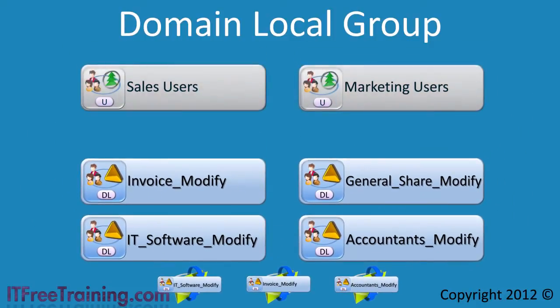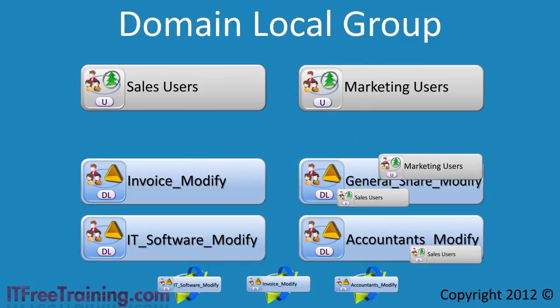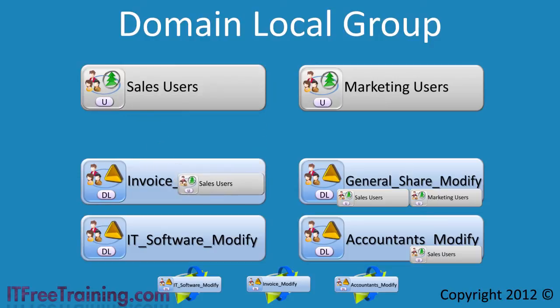Notice how easy it is when a new universal group like the top sales group is created. An administrator in each domain only needs to look at the universal groups that are available and add these to the domain local group — think of it like ticking boxes on a form. The IT administrator simply adds the universal group to the required domain local groups in order to provide access. If access needs to change later on, the administrator would simply change the required domain local group membership.